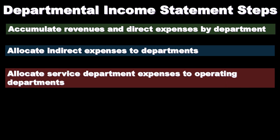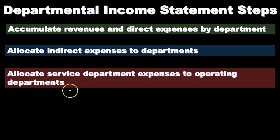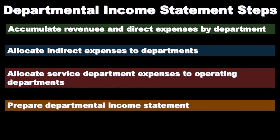Then we're going to allocate the service department expenses to operating departments. Remember that service departments are not generating revenue, so ultimately we want to take the total costs of the service departments and apply them out to the operating departments — those that are generating revenue. Once we've applied all costs to the service departments and know their total cost, we apply those total costs to the operating departments. Then we'll prepare the departmental income statement.